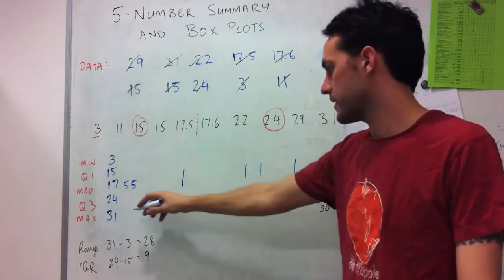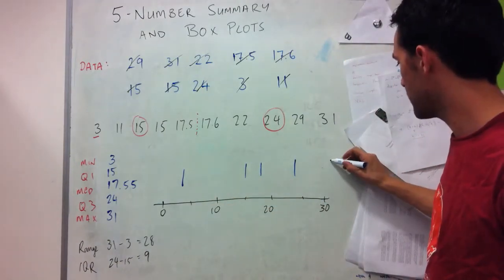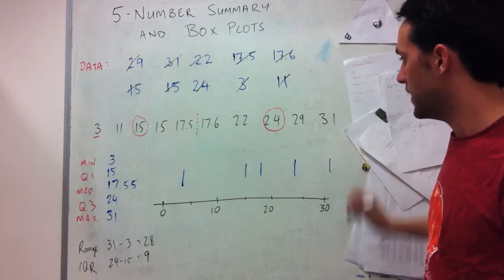And then finally, I've got my maximum, which is 31. So just sitting above this 30 mark here. Now, from Q1 to Q3, I enclose in a little box like this.